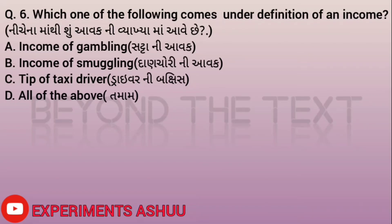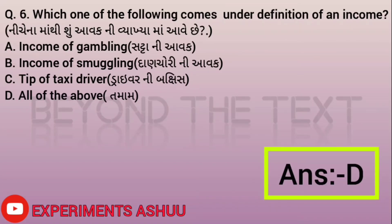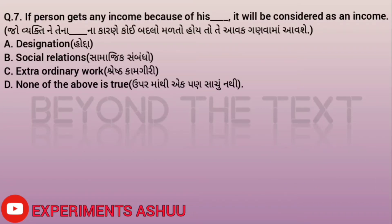Question six: Which of the following comes under the definition of income? A - income from gambling, which is an irregular source and still part of income; B - income from smuggling, which is an illegal source and can be regular or irregular but is still part of income; C - tip of a taxi driver, which is income received because of his designation. So the answer is D, all of the above.